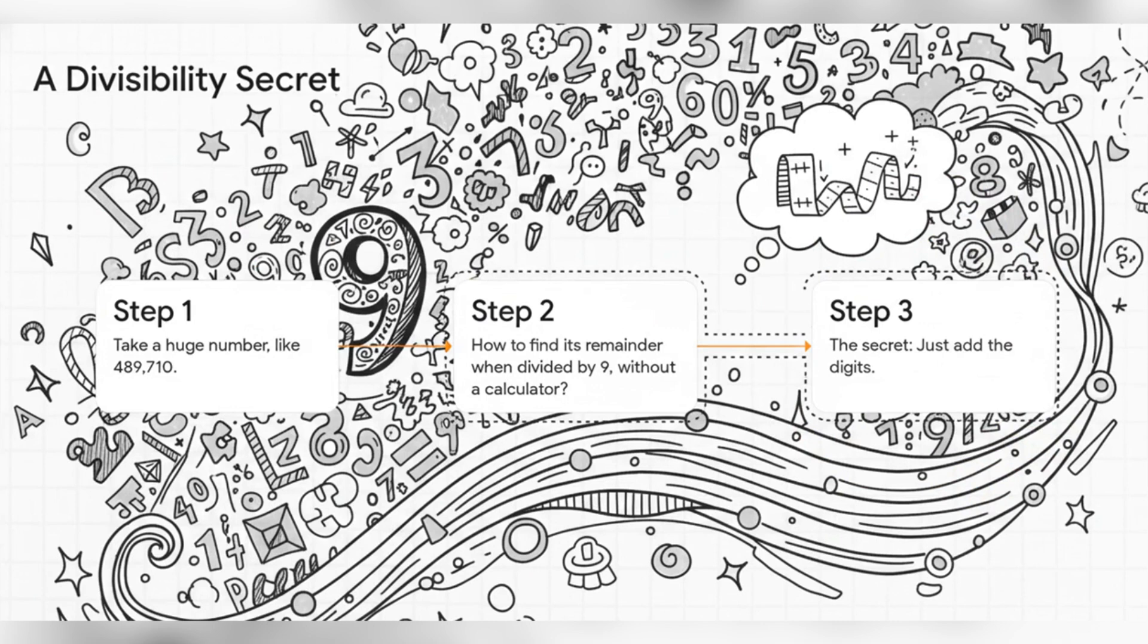All right, you ready for trick number two? Check out this beast of a number: 489,710. Now if I told you to find the remainder when you divide that by 9, you'd probably grab your phone, right? But what if I told you there's a secret shortcut? All you have to do is add up the digits. So 4 + 8 is 12, + 9 is 21, + 7 is 28, + 1 is 29. Okay, so what's the remainder of 29 divided by 9? Well, it's 2.